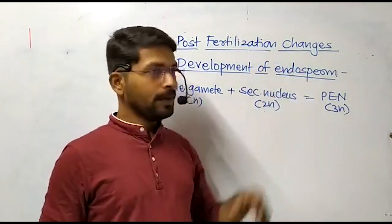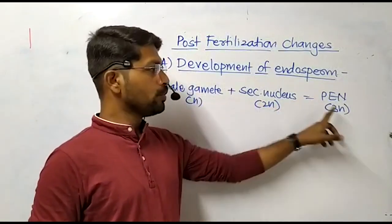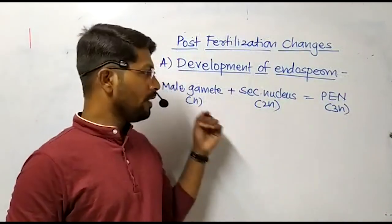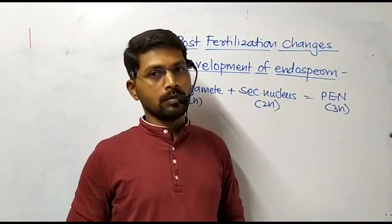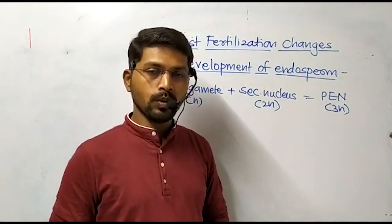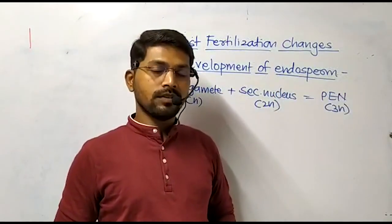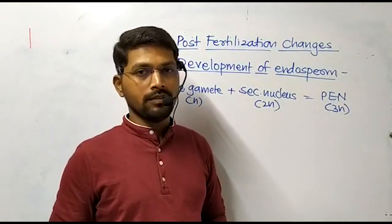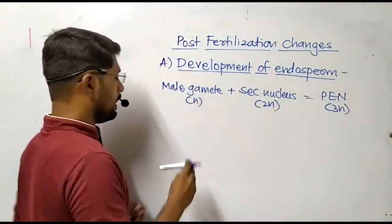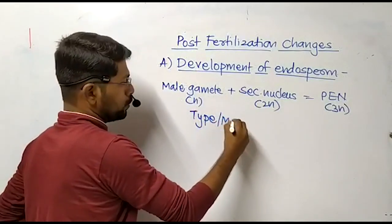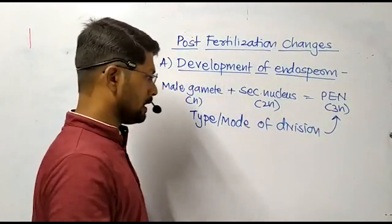Let us discuss the development of endosperm first. In the course of double fertilization in angiosperms, one male gamete fuses with the secondary nucleus to produce the primary endosperm nucleus. This process is called triple fusion, where a haploid nucleus fuses with two haploid nuclei of the secondary nucleus to produce the triploid primary endosperm nucleus. This primary endosperm nucleus will divide and redivide to produce the nutritive tissue called endosperm. On the basis of the division followed by the primary endosperm nucleus, there are three different types of endosperm seen in angiosperms — the basis of classification being the type or mode of division followed by the primary endosperm nucleus.